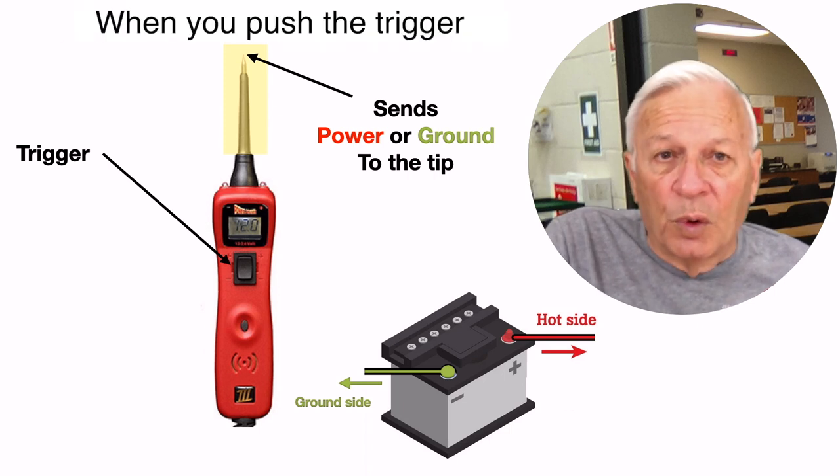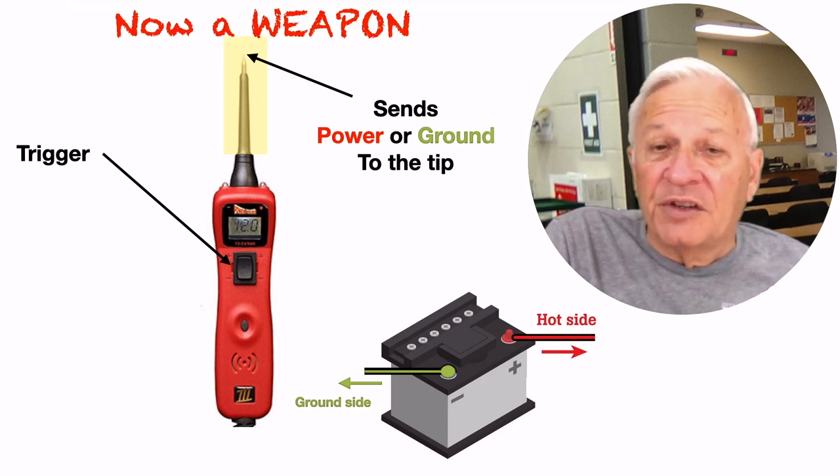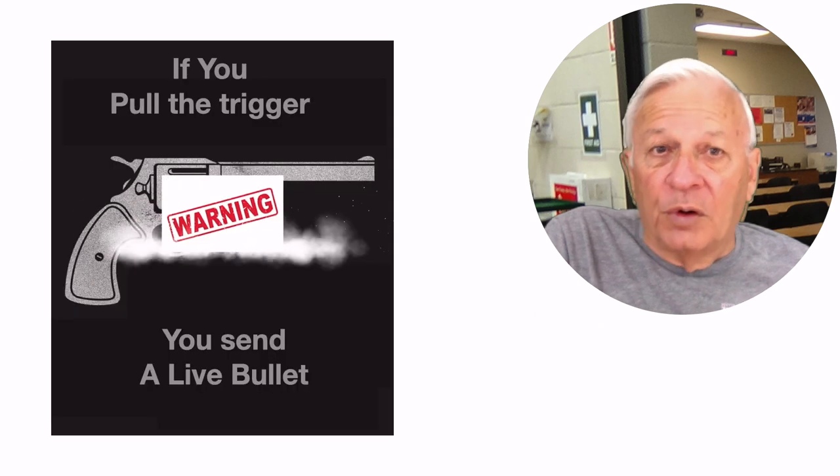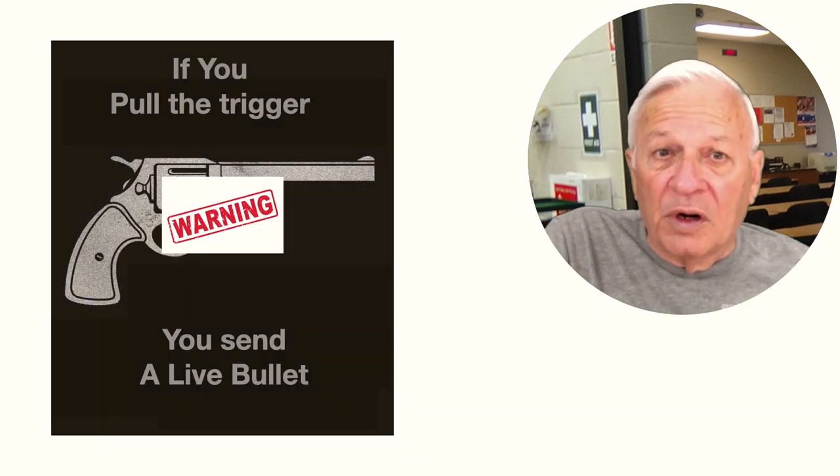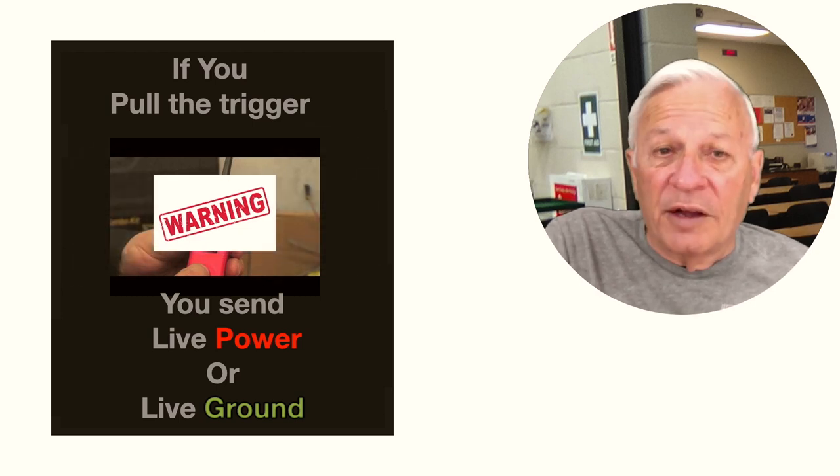Now, it's important to know, when you push the trigger, the tip is no longer a sensor. It is now an activator, and it is activating the circuit. Remember, if you pull the trigger on the gun, you send a live bullet. If you pull the trigger on a power probe, you send live power or live ground.